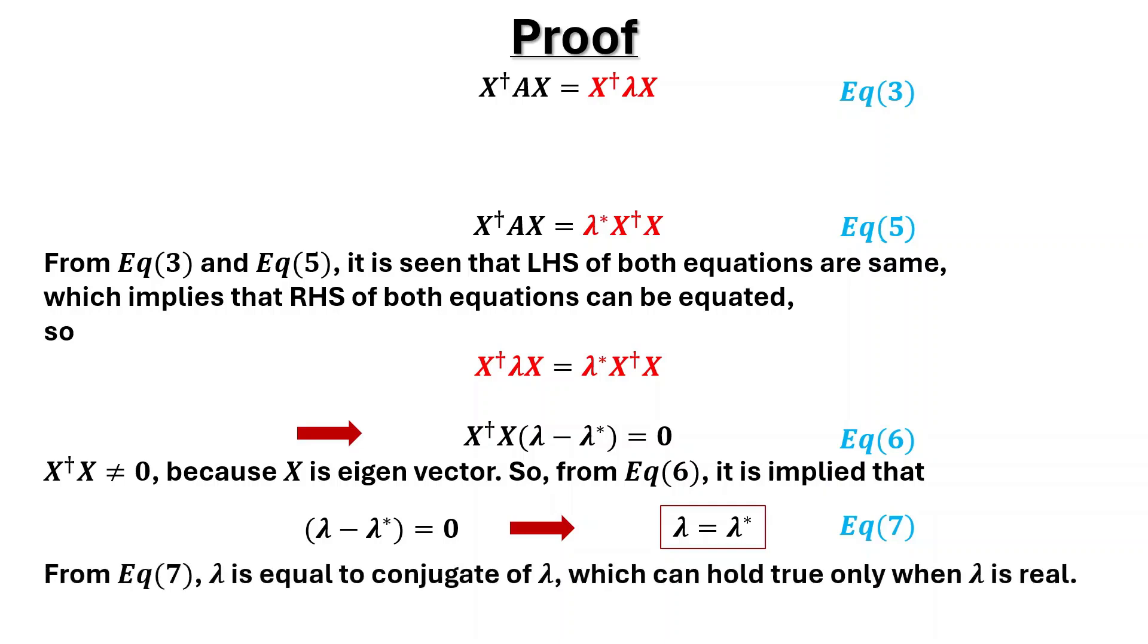From equation 7, lambda is equal to conjugate of lambda, which can hold true only when lambda is real. So Hermitian matrices have real eigenvalues.